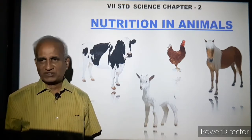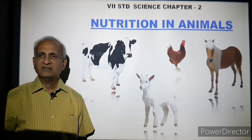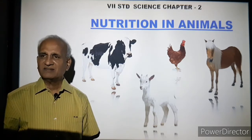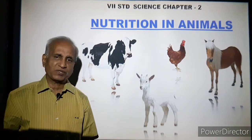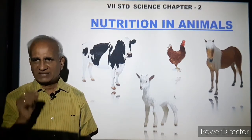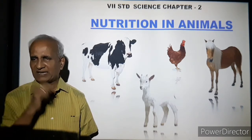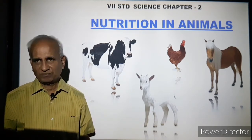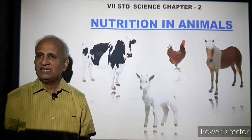Carnivores — like the tiger and the lion — eat other animals as their food. But study it with a little bit of interest. The food that they procure: maybe the lion eats a deer.